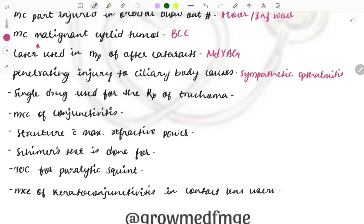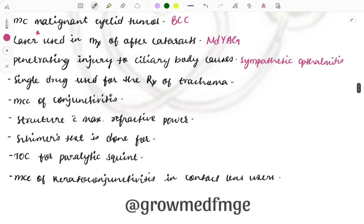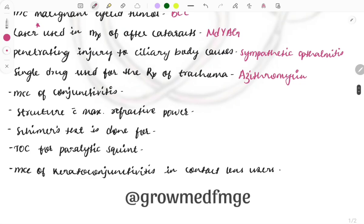Penetrating injury to the ciliary body causes sympathetic ophthalmitis, which is a type of pan-uveitis where all layers of the uvea are involved, causing inflammation of the uveal structures. Next, the single drug used for the treatment of trachoma is azithromycin — a single dose of azithromycin is used, and trachoma is a repeat topic. The most common cause of conjunctivitis is Staphylococcus aureus.